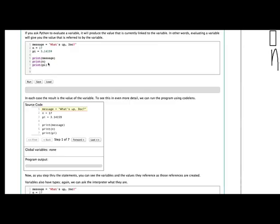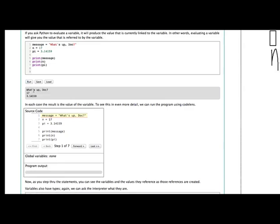So now you'll see in our print statement, we can refer to those values by their name. And so when we run this program, we'll see that it doesn't print out message. It prints out what message refers to, which is what's up doc. And it doesn't print out PI. It prints out the value that PI refers to or 3.14. All right.